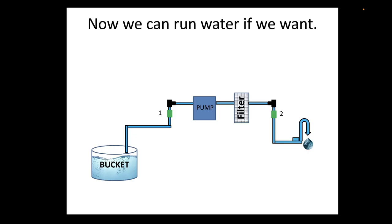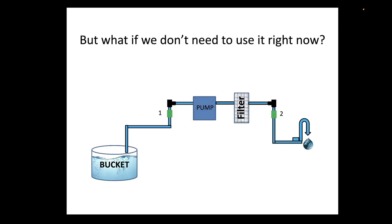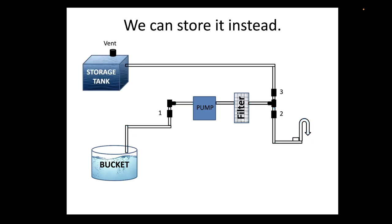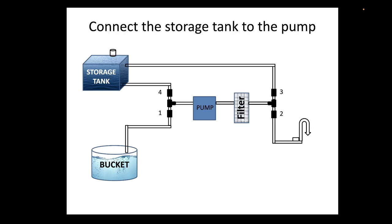But what if we don't want to use the water immediately? We have to store it in some way. So we have to add a storage tank. In order to divert the water we have to add a T and a couple of valves. Once we add the storage tank we have to have a means to getting water out of the storage tank and we add another T and another valve.